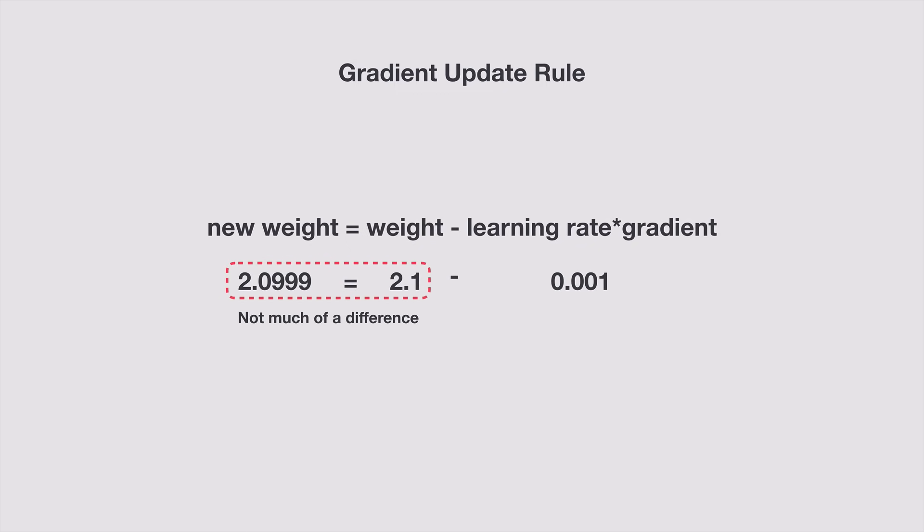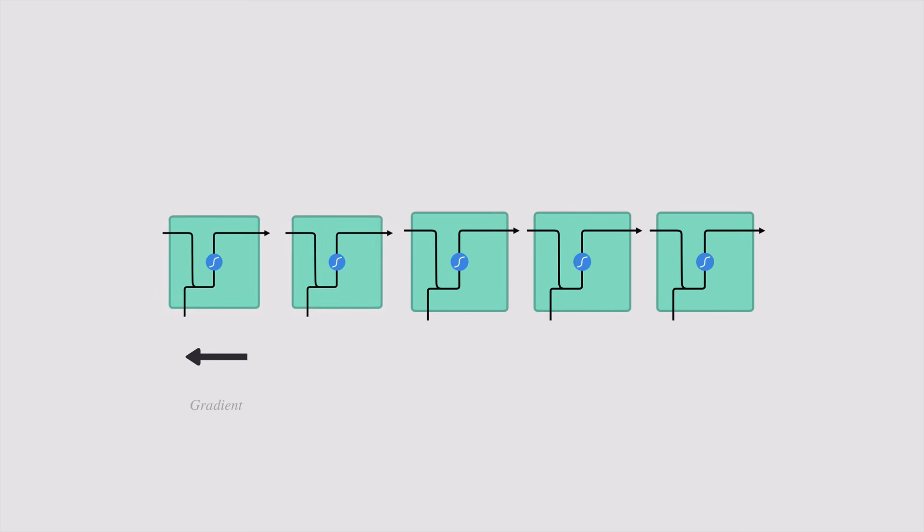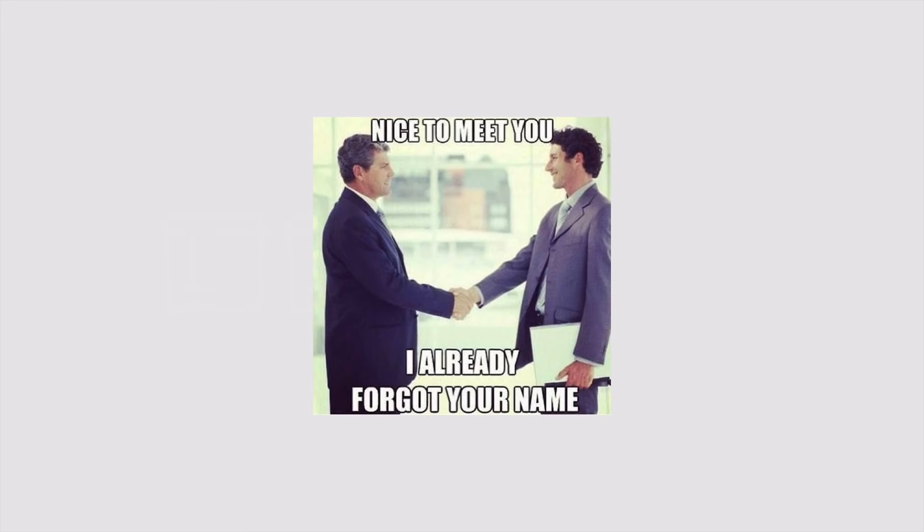The vanishing gradient problem is when the gradient shrinks as it backpropagates through time. If a gradient value becomes extremely small, it doesn't contribute to much learning. In recurrent neural networks, layers that get a small gradient update don't learn. Those are usually the earlier layers, so RNNs can forget what is seen in longer sequences thus having short-term memory.